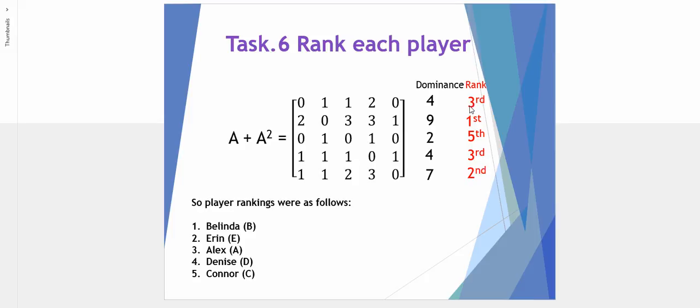Third place was shared between Alex and Denise. And finally, the fifth ranked row and indeed player, A, B, C is C for Connor. I hope this has helped understand how we can use our dominance matrix to rank sporting events. Thanks for watching.